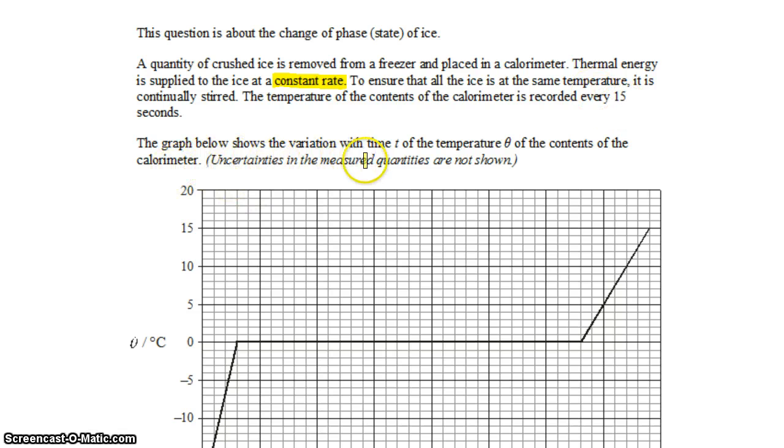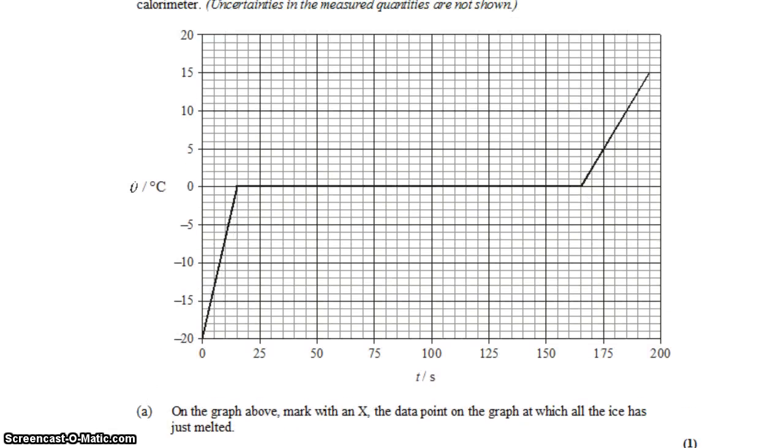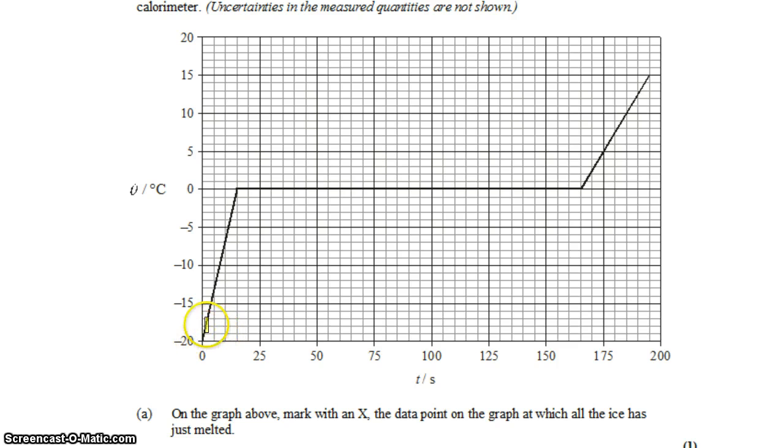The graph below shows the variation with time t of the temperature theta and the contents of the calorimeter. So we see the temperature rise with time, then remain steady, then begin rising again.